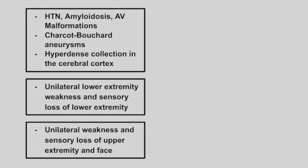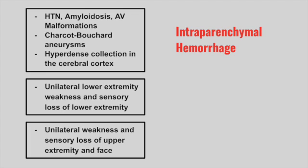Next is a patient with a past medical history of hypertension, amyloidosis, or AV malformations. The patient with hypertension can have Charcot-Bouchard aneurysms. They present with hyperdense collections in the cerebral cortex. This is an intraparenchymal or intracranial hemorrhage.